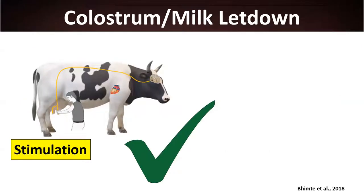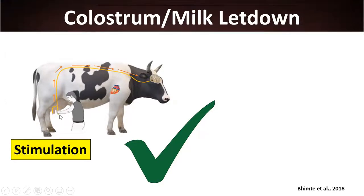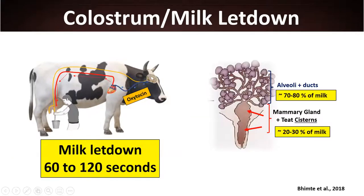Once cows calve and are brought to the parlor to collect colostrum, we must bring the animal calmly to minimize stress. When the udder prep routine begins and there is first contact with the teats, this stimulates a neuroendocrine reflex: nerve signals travel to the brain, which then releases oxytocin.